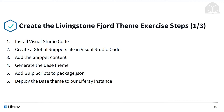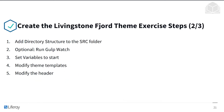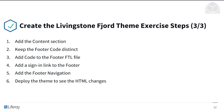Here are the steps we'll be taking. First, we'll install Visual Studio Code, then create a global snippets file in Visual Studio Code and add the snippet content. We'll generate the base theme and add the gulp scripts to package.json, then deploy the base theme to our Liferay instance. We'll add directory structure to the source folder, and as an optional step, run gulp watch. We'll set variables, modify the theme templates and the header, add the content section, keep the footer code distinct, add code to the footer.ftl file, add a sign-in link and footer navigation, then deploy the theme to see the HTML changes.